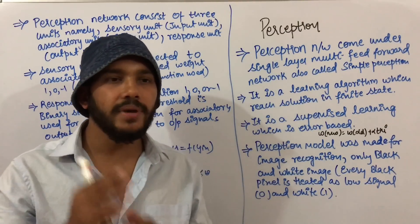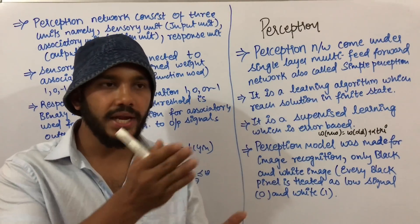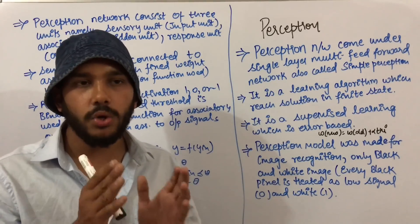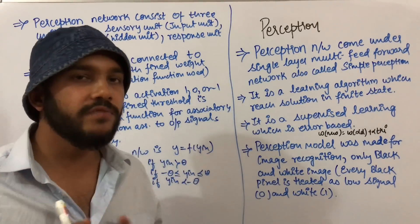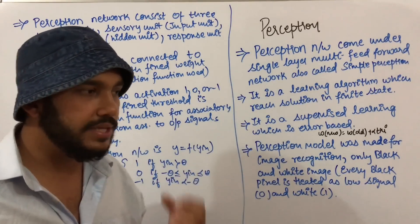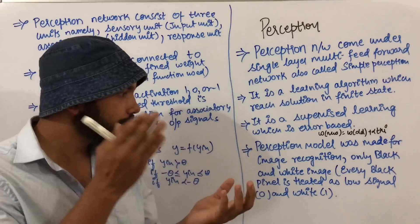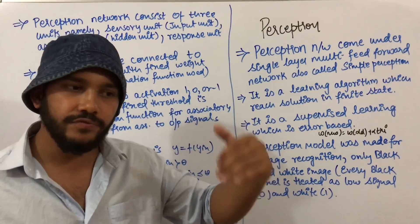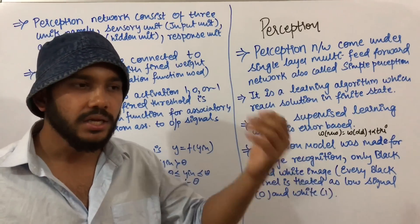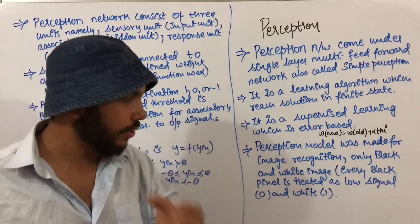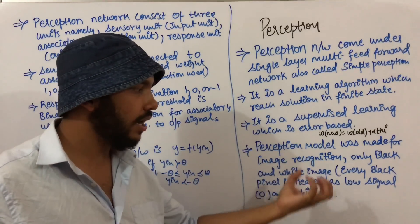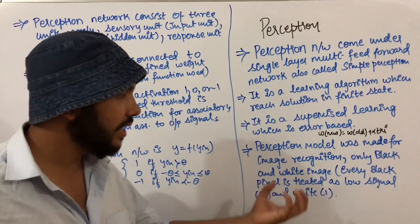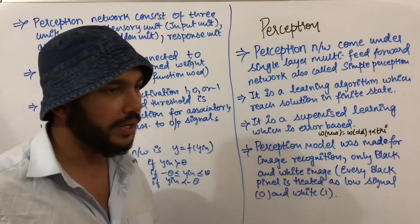The perceptron model was originally made for image recognition, specifically for black and white images. In this model, black is a low signal and has binary value zero, while white is a high signal and has binary value one.